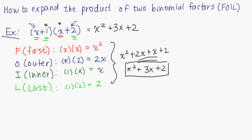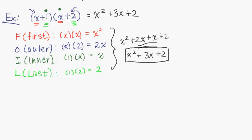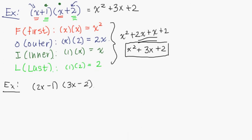Now let's do another example. Let's say we have 2x minus 1 times 3x minus 2. Let's use the same technique as above, starting with first. That's the first term in each of the factors, so that's 2x times 3x. 2x times 3x is equal to 2 times 3, which is 6, and then x times x, which is x squared.